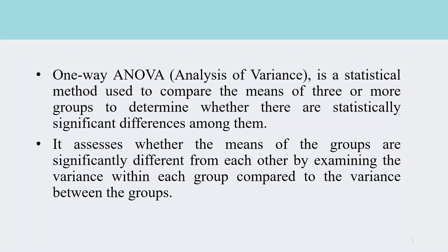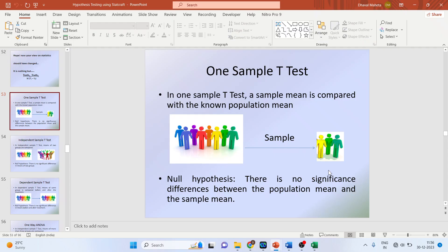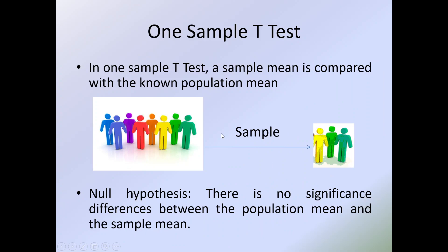Now how is ANOVA different from the t-test? Let's try to understand. We'll start with the one-sample t-test. In the case of a one-sample t-test, the sample mean is compared with the population mean.